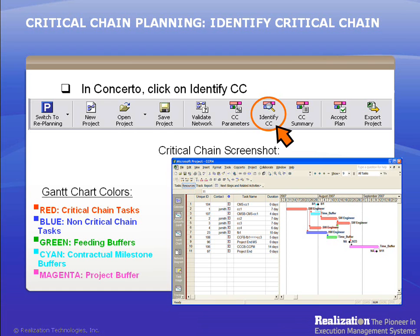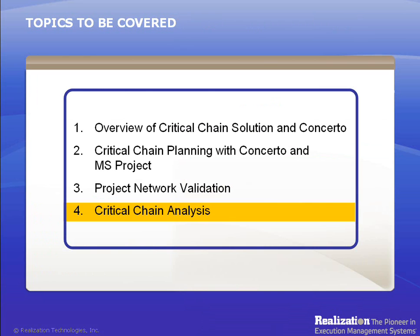Lastly, all tasks converge at the project end and project buffer. The project buffer has a magenta color. The project buffer in a critical chain plan serves two purposes: first, it aggregates hidden local safeties in a visible buffer to cushion uncertainties; secondly, it is used as a measure in determining task priority. After Concerto gives you a remake of your project network, you'll need to analyze the network and possibly do some final touch-up to ensure it meets your goals.